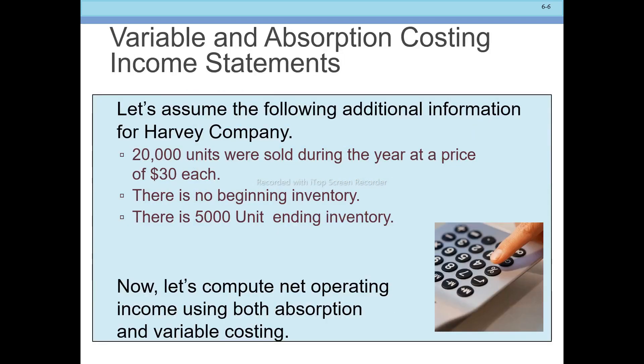Now let's prepare the absorption costing income statement. Assume the following additional information: 20,000 units were sold during the year at a price of $30 each. There is no beginning inventory, so we need to determine the ending inventory as well.